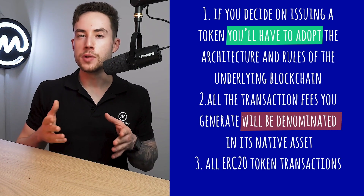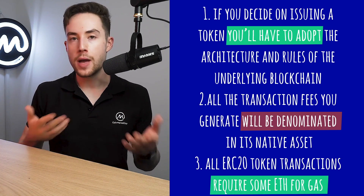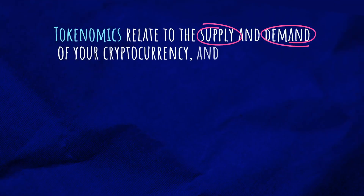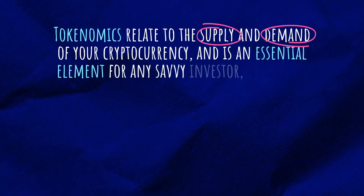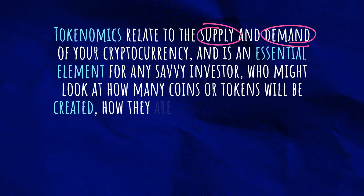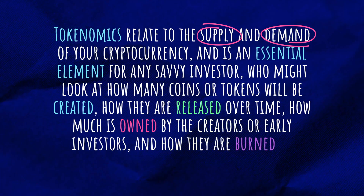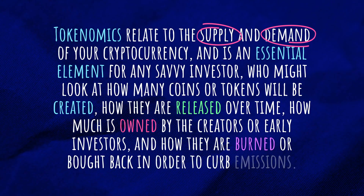However, if you decide on issuing a token, you'll have to adopt the architecture and rules of the underlying blockchain, and likely all the transaction fees you generate will be denominated in its native asset. For example, all ERC-20 token transactions require some ETH for gas in order to execute. Tokenomics is an absolutely vital component of any cryptocurrency, which is still completely misunderstood by some crypto investors. Tokenomics relates to the supply and demand of your cryptocurrency, covering how many coins or tokens will be created, how they are released over time, how much is owned by the creators or early investors, and how they are burned or bought back to curb emissions.